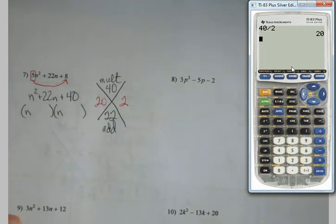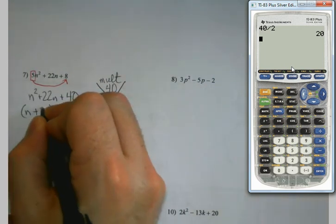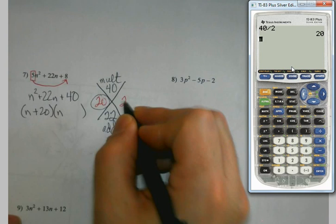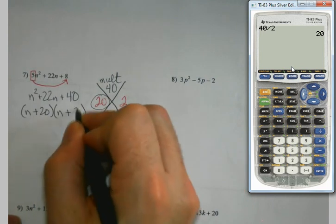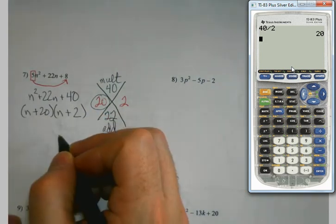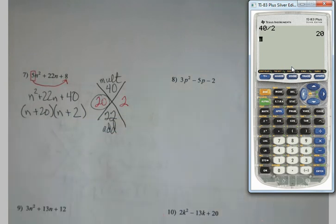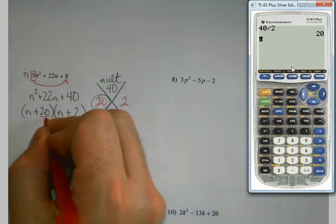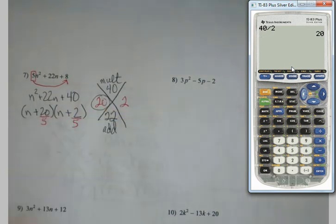So we've got n plus 20, n plus 2. Can I circle this? No, not quite yet.